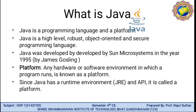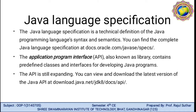What do you mean by platform? A platform is any hardware or software environment in which a program runs. For example, an operating system. Since Java has a runtime environment, JRE, and API, it is called a platform. Java language specification is a technical definition of the Java programming language syntax and semantics. You can find the complete Java language specification at docs.oracle.com/JavaSE/specification.